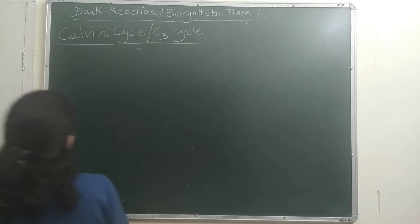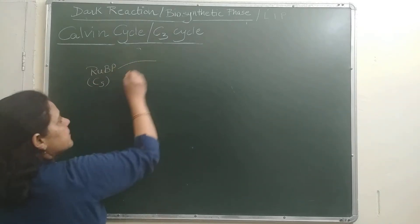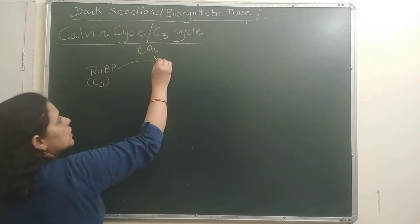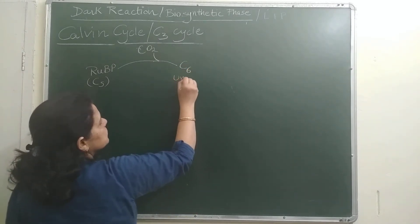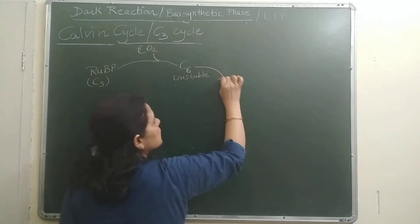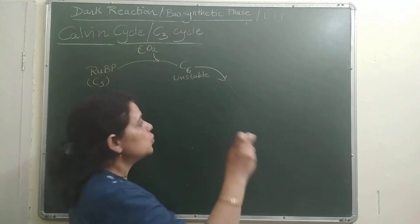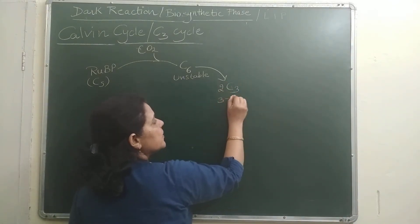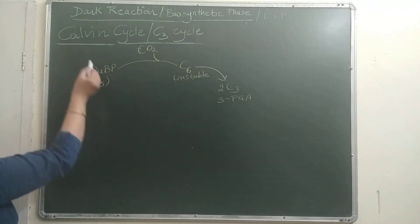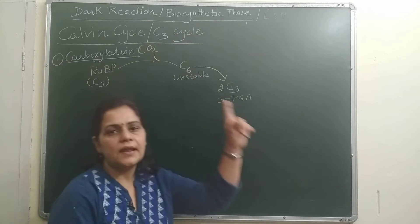So what happens here? Our RuBP, which is a C5 carbon compound, it is the primary acceptor. CO2 comes from outside through stomata during photosynthesis. So this combines with CO2 and it forms a C6 compound. But this is unstable. So we studied first stable product. First stable product, this C6 what does it do? It splits. It doubles, however many molecules there are, double. So it splits into two C3 molecules. So two C3 are formed. And what is this C3? This is 3-PGA, 3-phosphoglyceric acid. This is the first step in Calvin cycle. What do we call this first step? Carboxylation, carboxylation of RuBP. That's the first step.